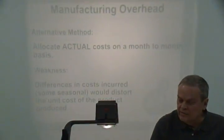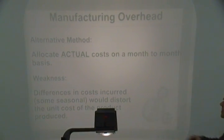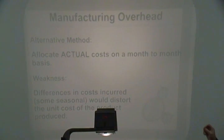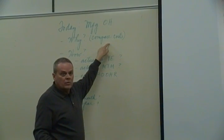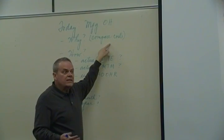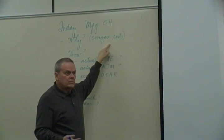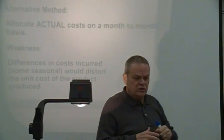This is the one I just finished talking about — allocating actual cost on a month-to-month basis. The differences in cost incurred, some of them seasonal, would distort the unit cost, and my goal at the very beginning of this was to get comparable cost — costs that we could use to make decisions, good information on which we can base decisions. These are not good ways to do it.